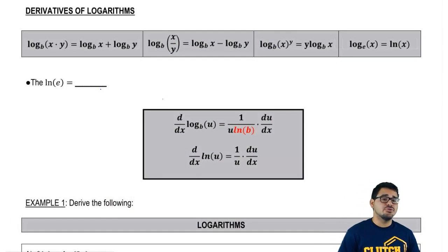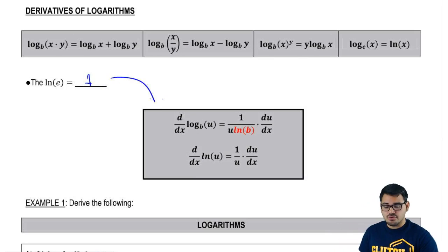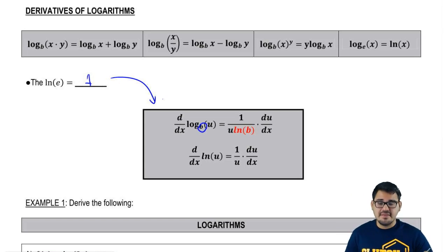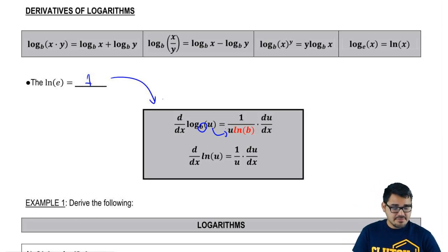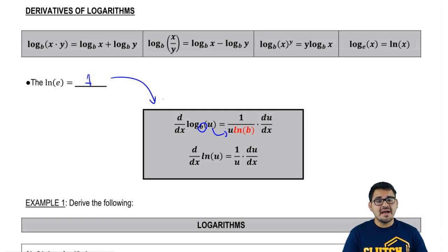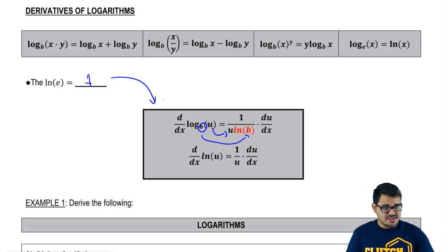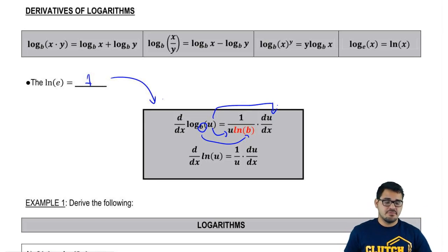The derivative of log base b of u, where b is the base of the logarithm, is equal to 1 over u — u being whatever is inside the parentheses of the logarithm — times 1 over ln of b on the denominator, and then multiplied by the derivative of u, the derivative of whatever is inside the parentheses.